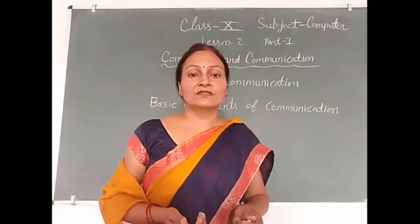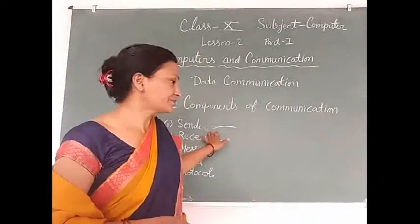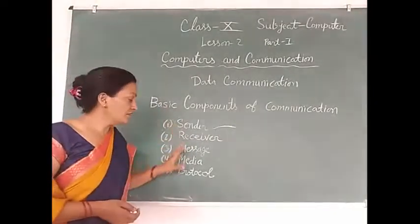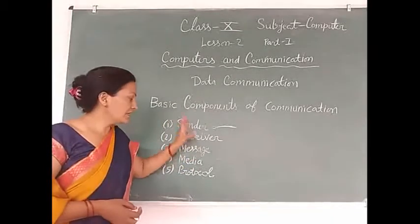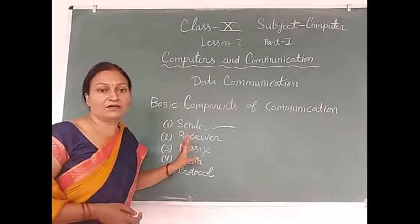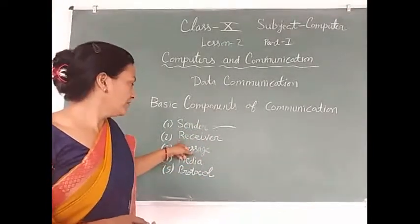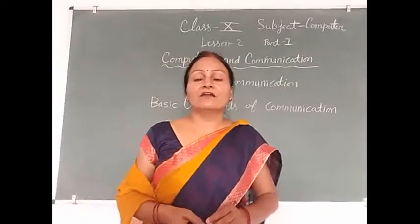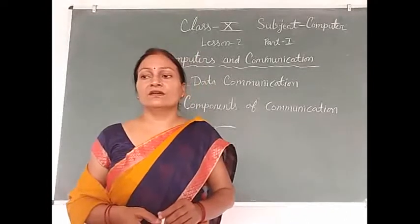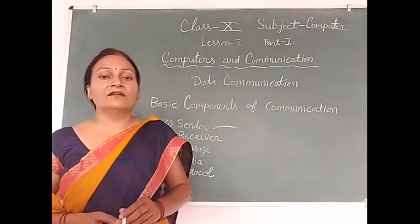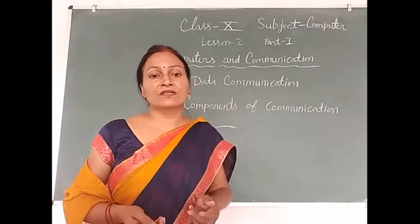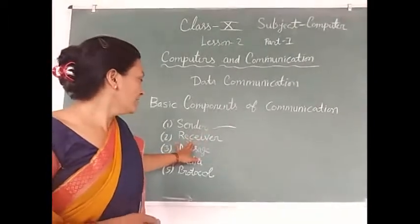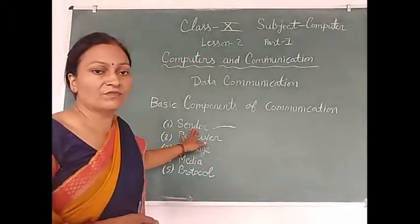Sender means that device which sends messages to the receiver is called sender. The second component is receiver. These components are the main components of data communication — if any component is absent, data communication is not possible. Receiver is used to accept signals of the communication system and convert them into understandable form. Generally, receiver is a computer with a modem, and it accepts messages sent by the sender.